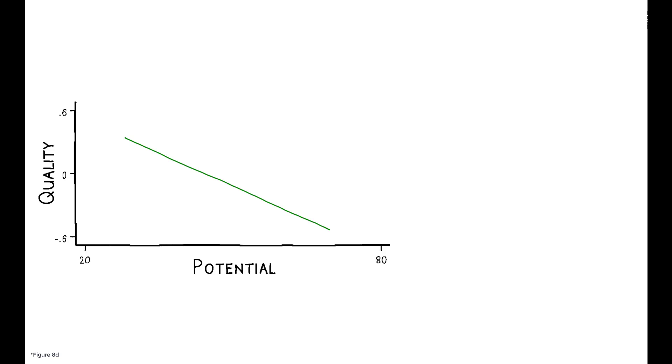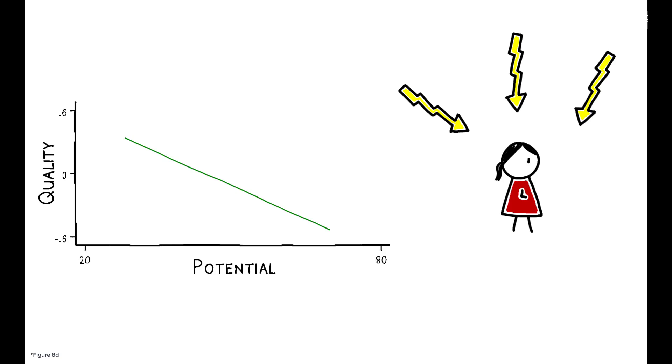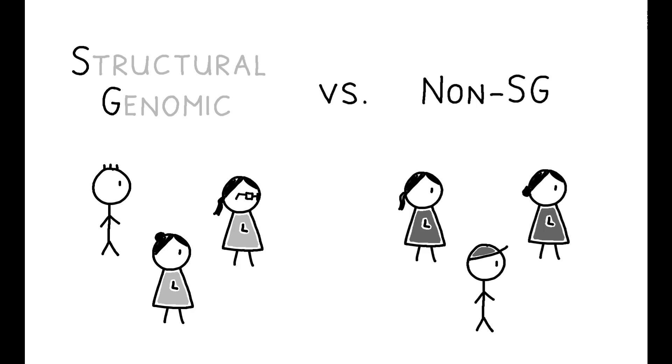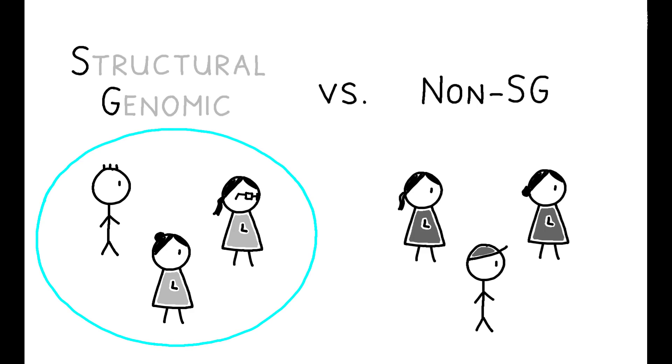Second, the negative relationship between potential and quality is mitigated when scientists are insulated from competitive pressures. To show this, the paper compares structural genomic researchers and non-SG researchers. SG groups are federally funded consortia, and qualitative evidence suggests these scientists are less exposed to competitive pressures relative to their university or industry-based counterparts.